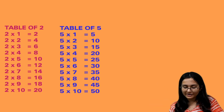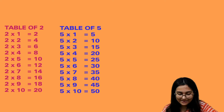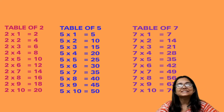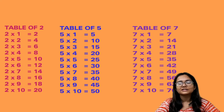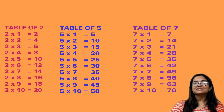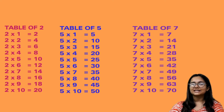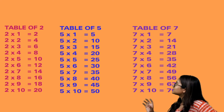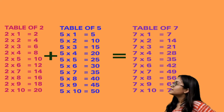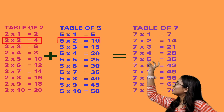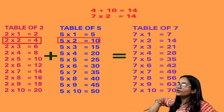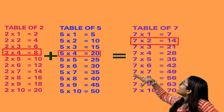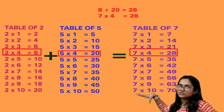So we have written the tables of 2 and 5. Now what we need to do is make the table of 7. The table of 7 is: 7 1s are 7, 7 2s are 14, 7 3s are 21, 7 4s are 28, 7 5s are 35, 7 6s are 42, 7 7s are 49, 7 8s are 56, 7 9s are 63, and 7 10s are 70. To make the table of 7, we added the tables of 2 and 5 — for example, 2 2s are 4 and 5 2s are 10; adding 4 and 10 gives 14. Similarly, 2 4s are 8 and 5 4s are 20; adding 8 and 20 gives 28, which is 7 4s.